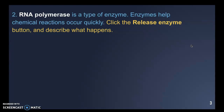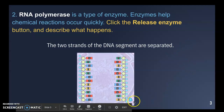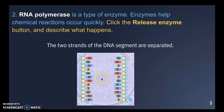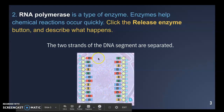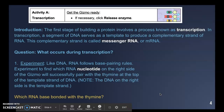Step two: RNA polymerase is a type of enzyme. Enzymes help chemical reactions occur quickly in your body — think back to our biochemistry unit. When we release the enzyme, RNA polymerase takes the two strands of DNA and separates them. The enzyme went through and separated them right down the middle where the hydrogen bond was between the two nitrogen bases.